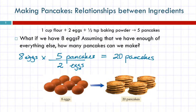Many of you did that in your head without even recognizing what you were doing — you just thought about it. This is scaling up a recipe. What if you needed to make 150 pancakes for the pancake breakfast? You could figure out how many eggs you need. Any questions?